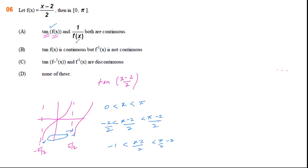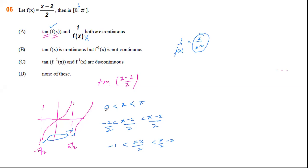Now consider 1 by f(x). We know that 1 by f(x) is clearly 2 divided by (x minus 2). This will be discontinuous at x equals 2, and x equals 2 is lying between 0 and π. So 1 by f(x) is not continuous on this interval.